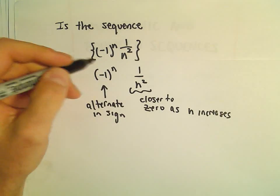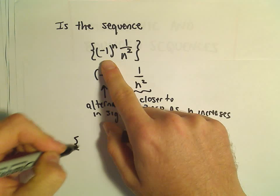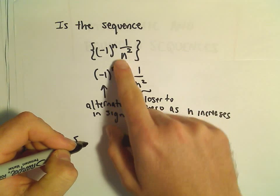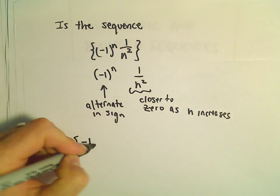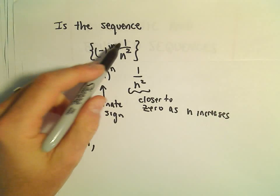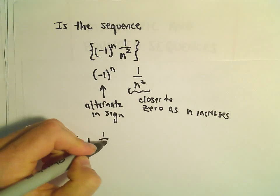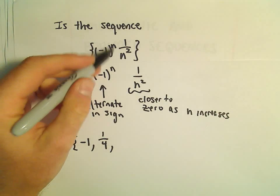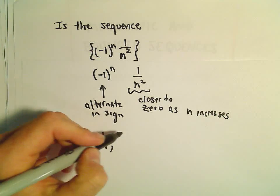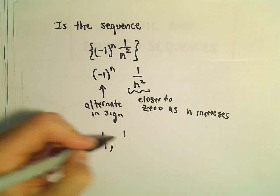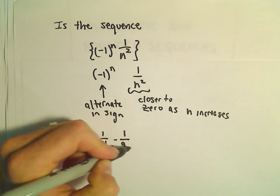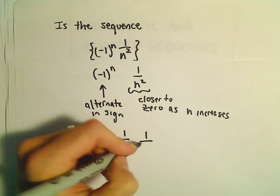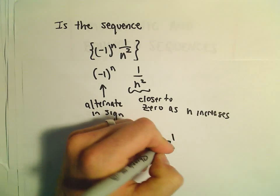You can even plug in numbers. If we plug in 1, we would get -1 times 1/1, so we would get -1. If we plug in 2, we would get a positive 1/4. If we plug in 3, we would get a negative 1/9. And then positive again, if you plug in 4, we'll get 1/16, etc.